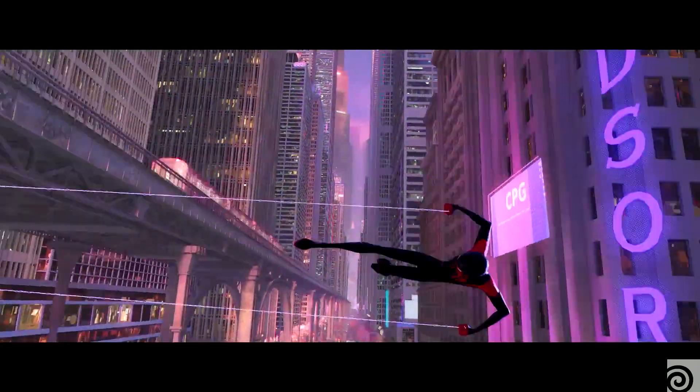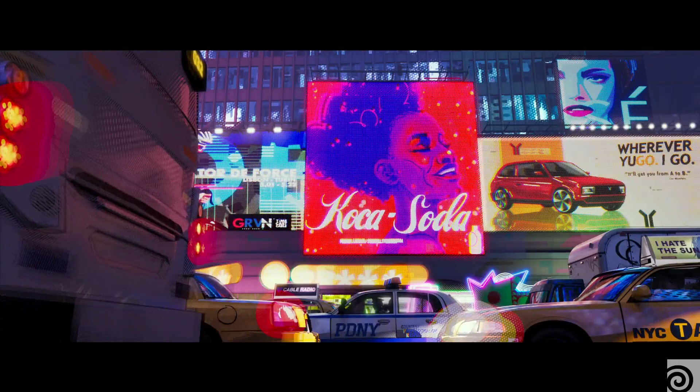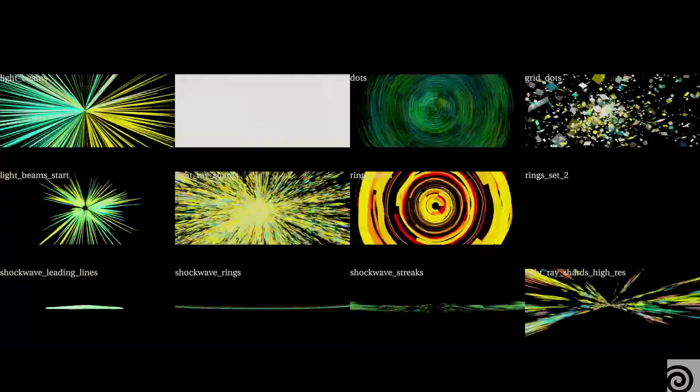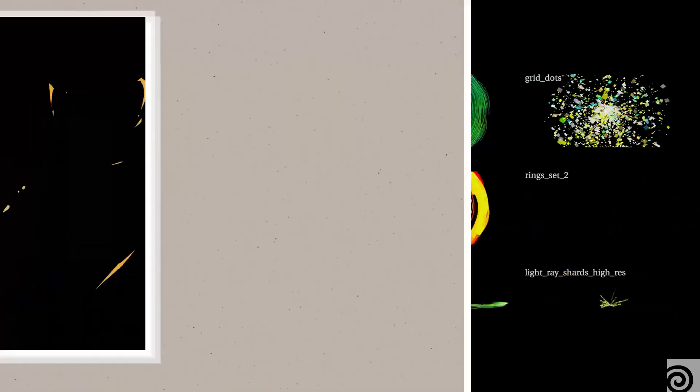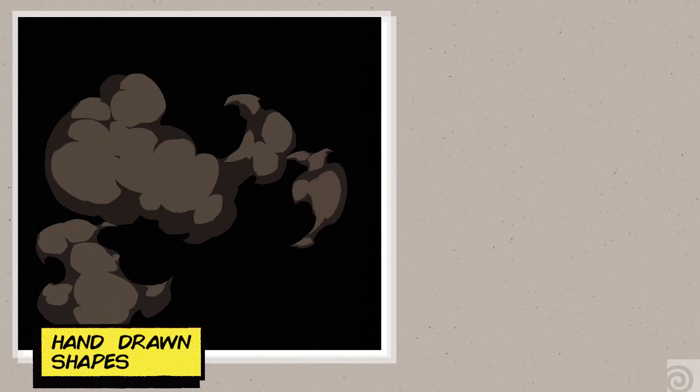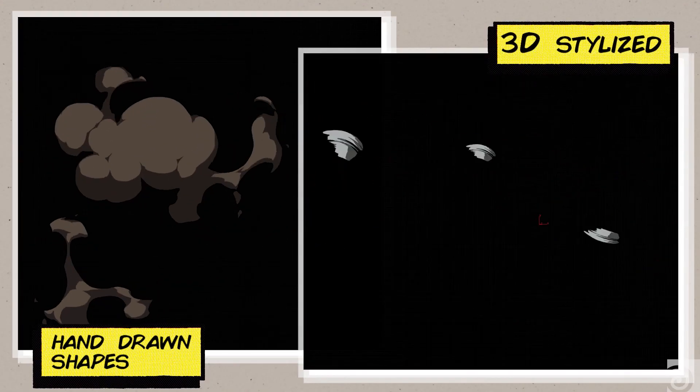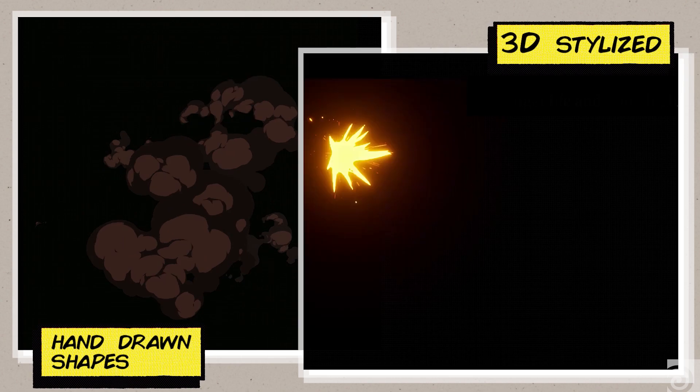We used Houdini in all kinds of ways. We used it for motion blur, creating these really interesting abstract motion-blurred lines. We used it for creating impact lines — where say a character is busting through a door, we would create these very procedural spiky shapes that were very similar to anime-style motion streak lines.